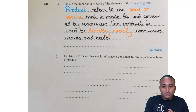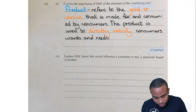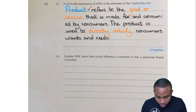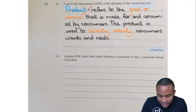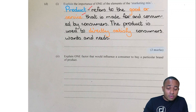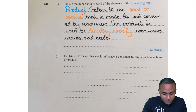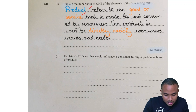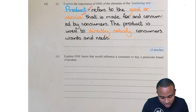Explaining the importance of product: first, state 'product' for one mark. Product refers to the goods and services made for and consumed by consumers. The importance is that the product is used to directly satisfy the wants and needs of consumers.